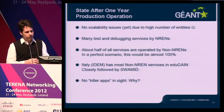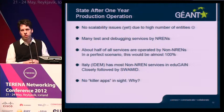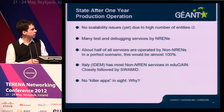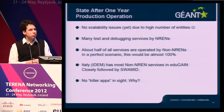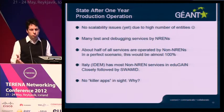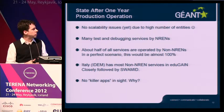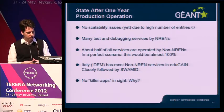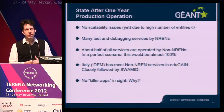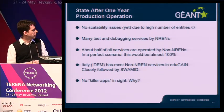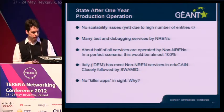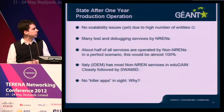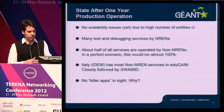Currently, the number of services is not so great that we face any problems yet. There are still, after one year of production operation, some test and debugging services operated mostly by NRENs. Half of the entities are operated by non-NREN organizations, which means universities. That is great. In a perfect world, this would be almost 100%, because EduGain is supposed to serve the universities and the research and education community, not primarily the NREN community.